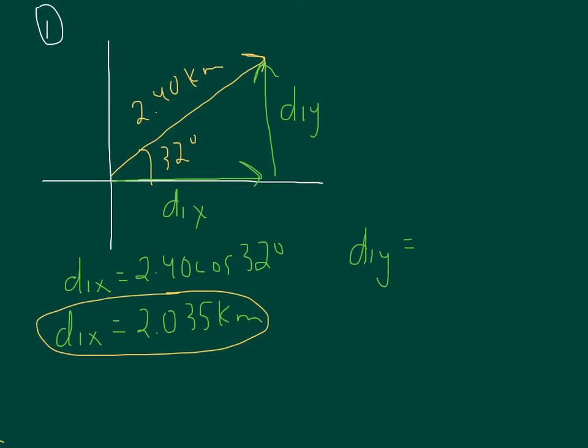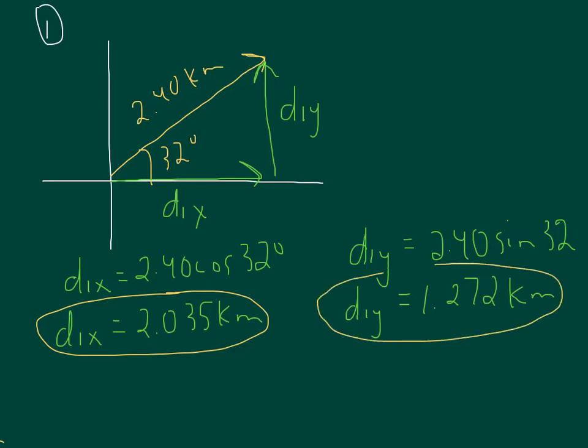D1y is hypotenuse, sine angle. So D1y will be 1.272 kilometers. And again, don't round. So we've just found the first two components for the first vector.